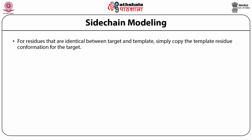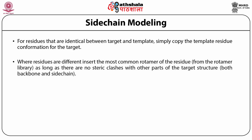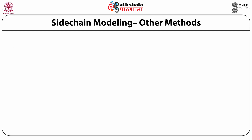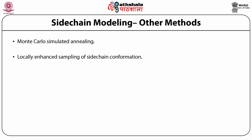Side chain modeling becomes quite critical in densely packed areas of the protein. There are a number of techniques, for example the dead-end elimination theorem, which one could use for this. When residues in your target protein are different from the template, one has to be careful in side chain modeling as things might diverge. The critical part is to ensure there are no steric clashes with other parts of the target structure. One could also use Monte Carlo simulated annealing, locally enhanced sampling of side chain conformations, systematic sampling, or self-consistent mean field methods.